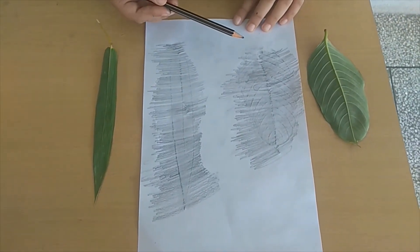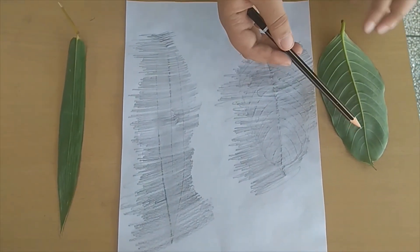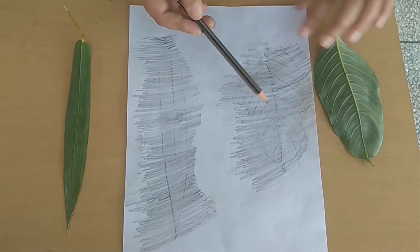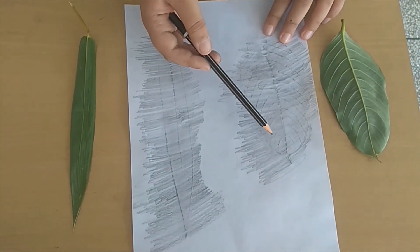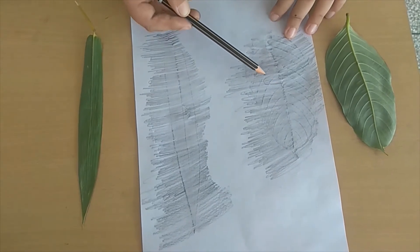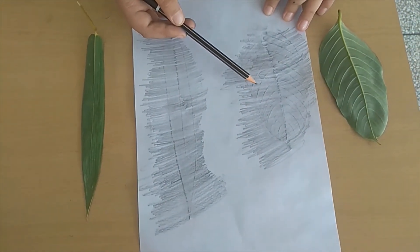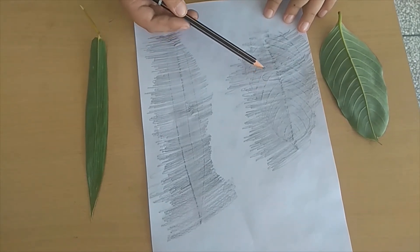As we can see, we get a design of lines which is similar to the lines of leaves. These lines are called veins and the middle line is known as midrib, and this whole structure of veins is known as leaf venation.